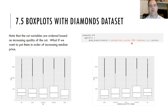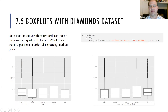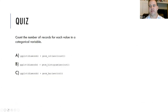We then looked at box plots where we were able to look at the distribution of the price variable broken out by the categorical variable of cut. We also looked at reordering those as well. That catches us up for what we've covered over the last few weeks, and so naturally it is time for a quiz.